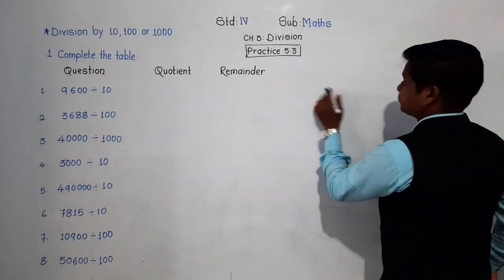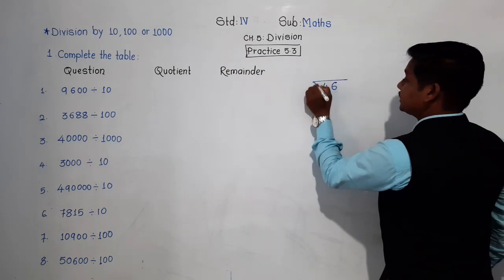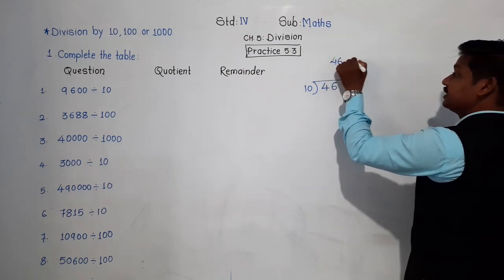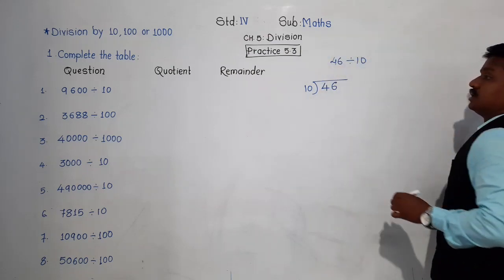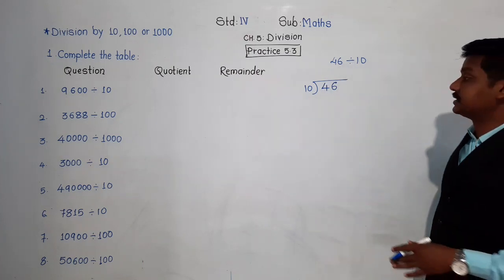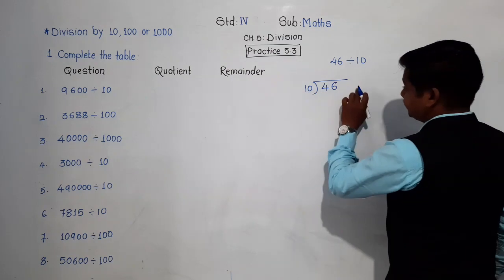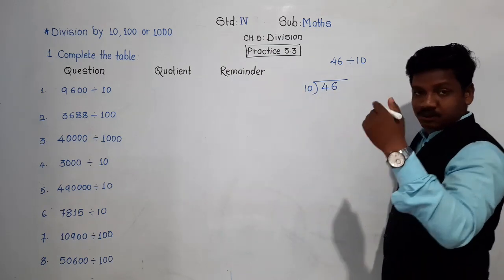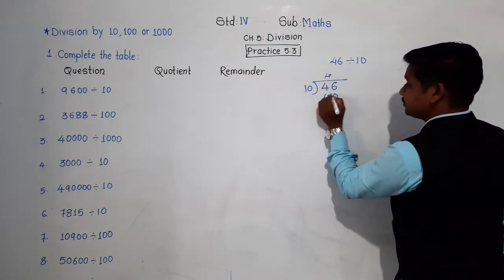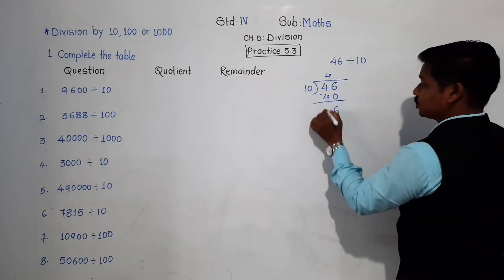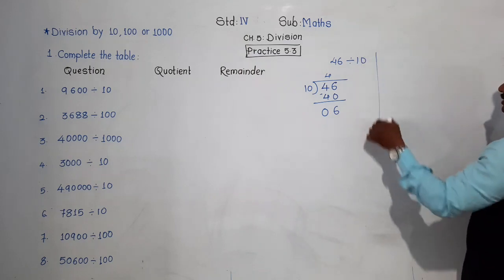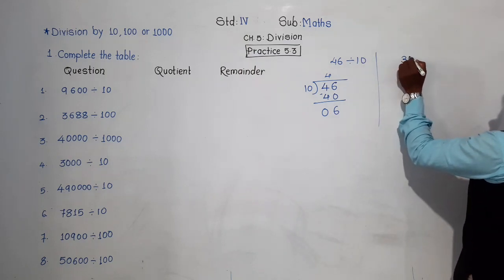Let's take an example: 46 divided by 10. When we divide 46 by 10, you know the table of 10. 46 is not there in the table of 10, so the smaller number in the table of 10 is 40. So 10 fours are 40. We get quotient 4 and remainder 6.